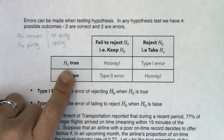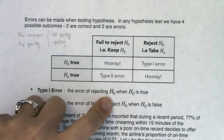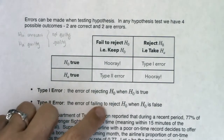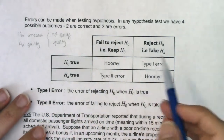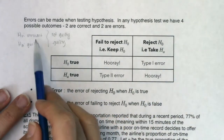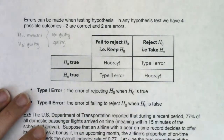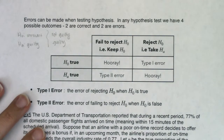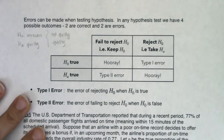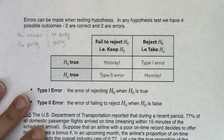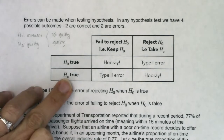On the flip side, what if somebody was innocent but you rejected that innocence and found them guilty? If somebody was innocent and you found them guilty, we call that a Type 1 error in stats. That would be like finding an innocent person guilty.